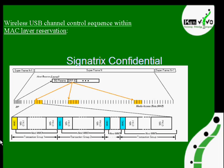A single wireless USB host can also support a maximum of 127 devices. Regarding the difference between wireless USB and Bluetooth: the basic difference is that in Bluetooth the power consumption is high compared to wireless USB. The power consumption in wireless USB is 5 times lesser than Bluetooth.